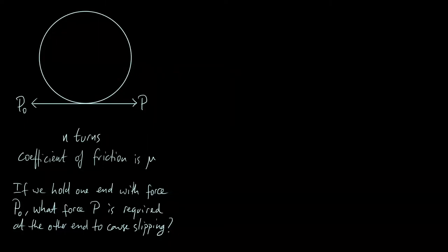Hello everyone, today we're going to look at a really interesting physics problem. What we've got is a rope or a string — that's what is represented by this horizontal line at the bottom of this diagram — and we also have a cylinder, as you can see. The rope is wrapped around this cylinder some number of times, n times, and we're pulling one side of the rope with a force of P0 and the other side with a force of P.